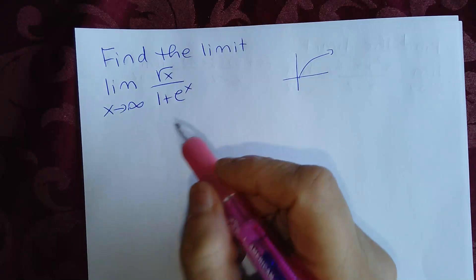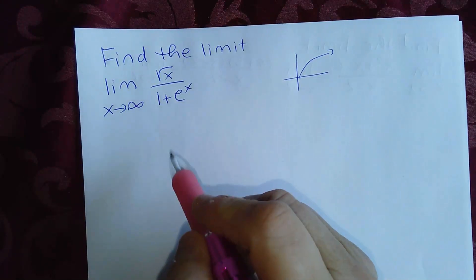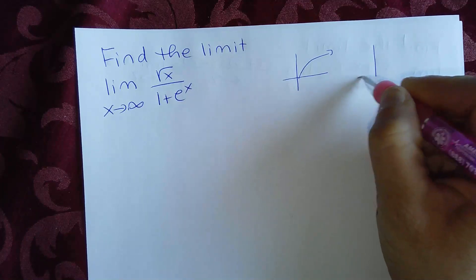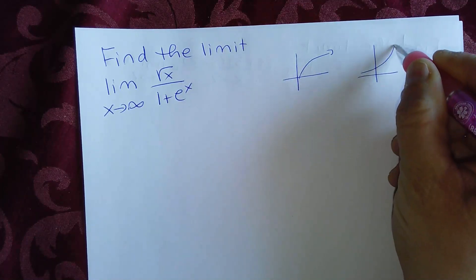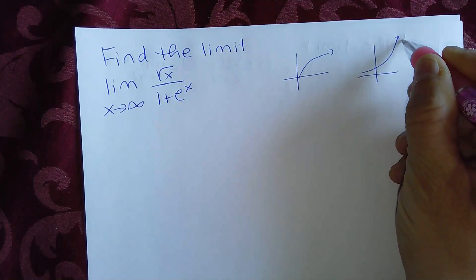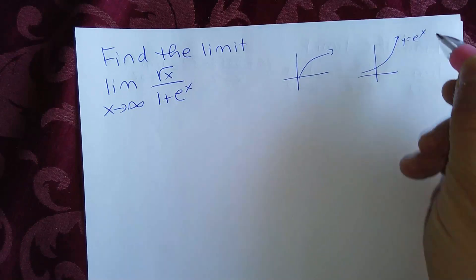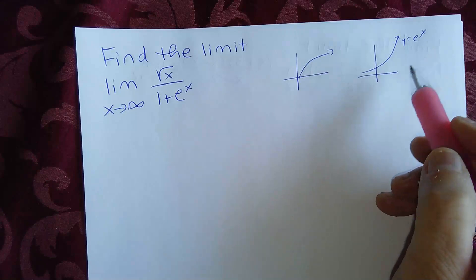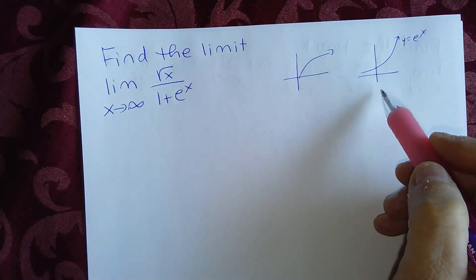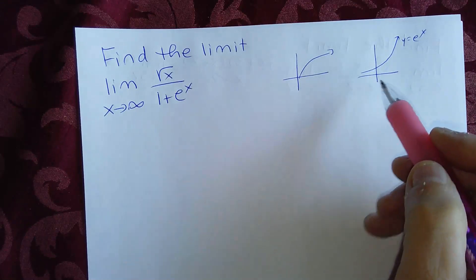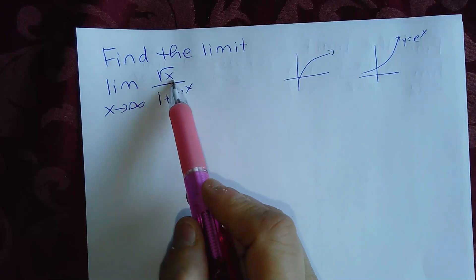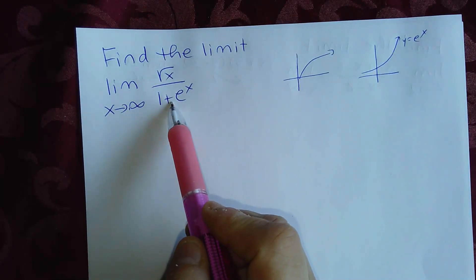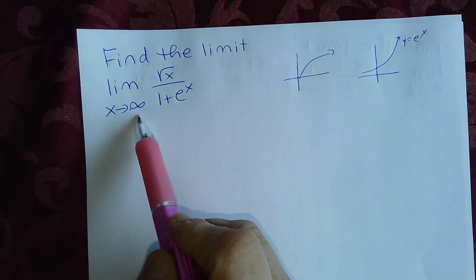In the denominator, we have 1 plus e to the x. The graph of e to the x looks like this, and as x increases, e to the x also increases without bound.